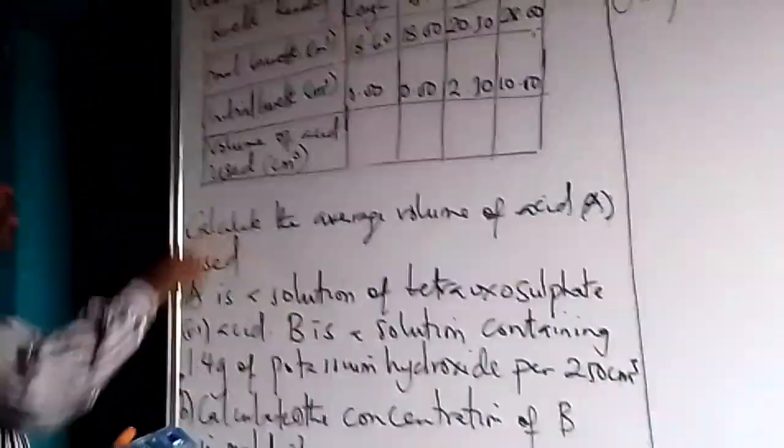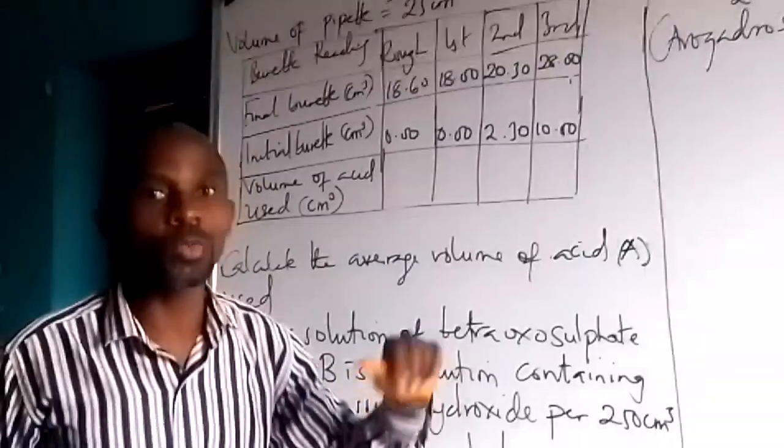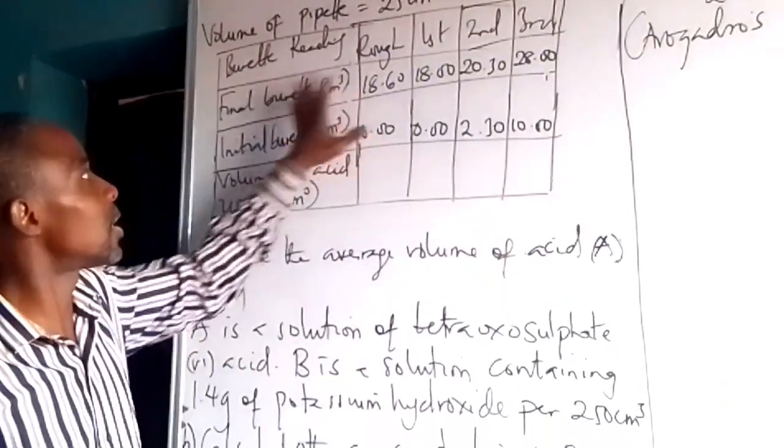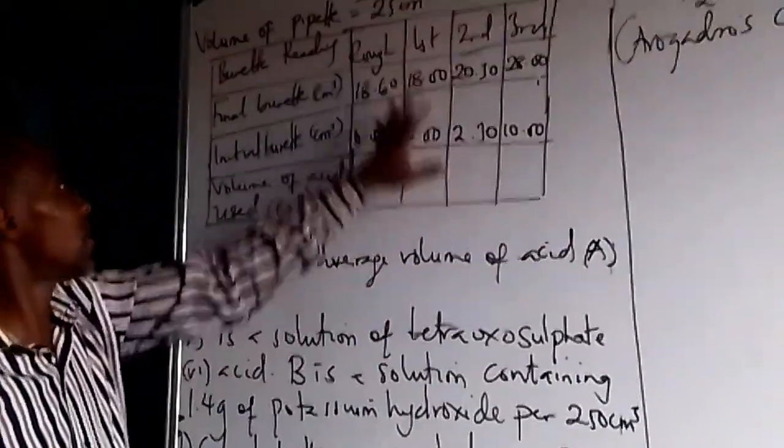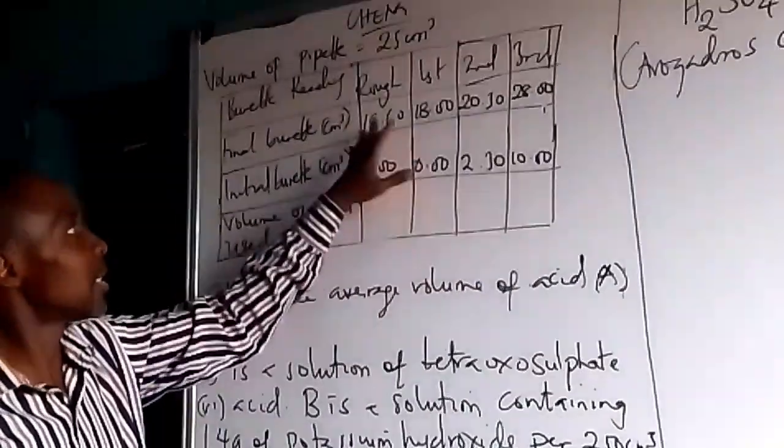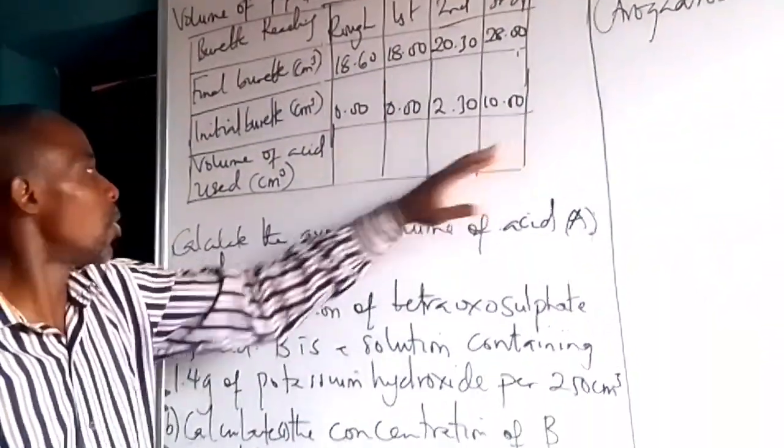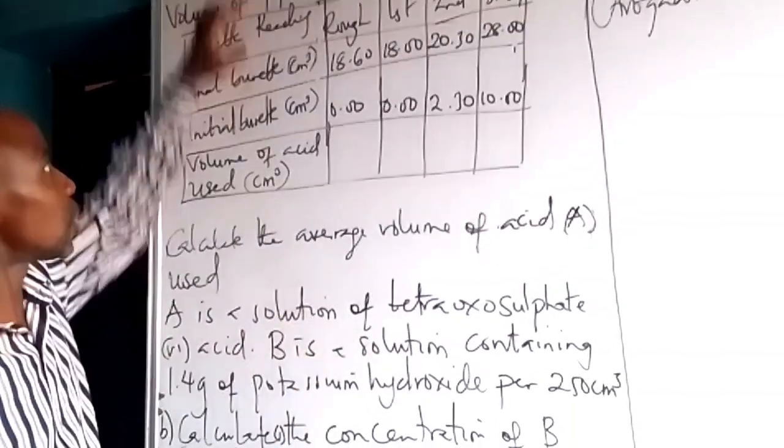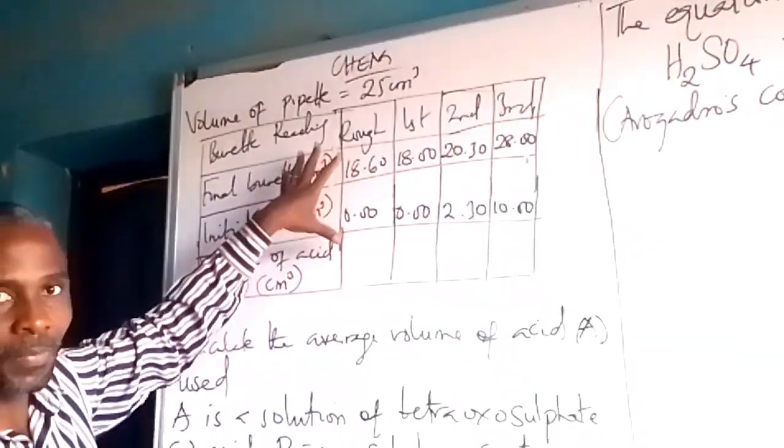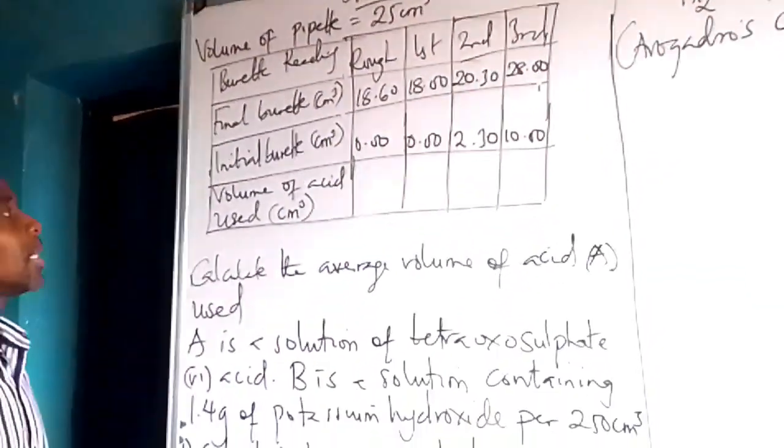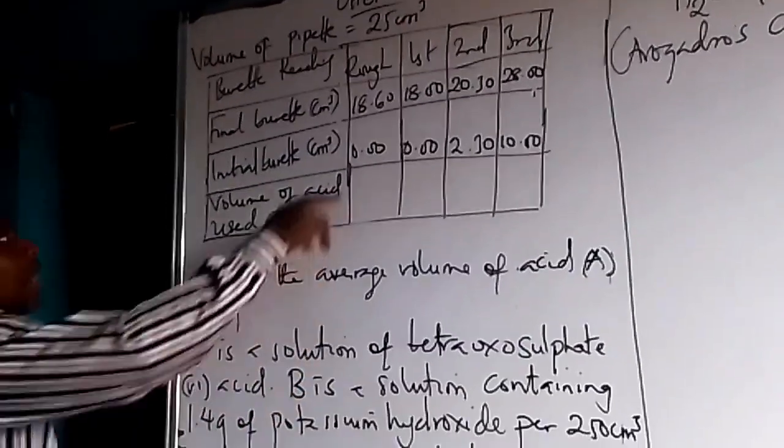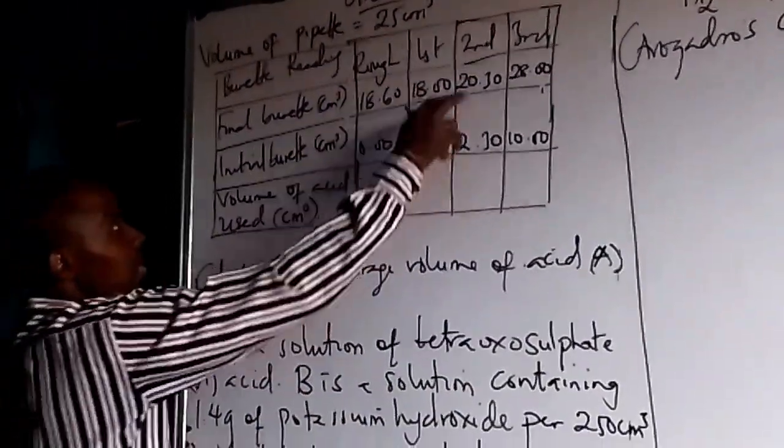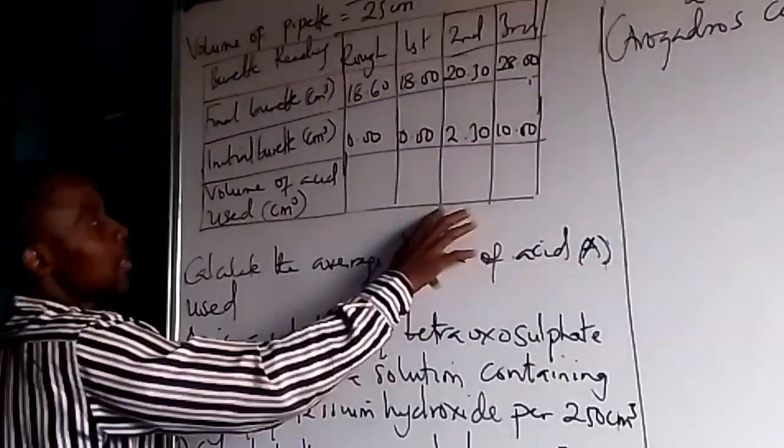Very quickly, you'll be given a table like this for alternative to practical chemistry. You'll be given a table like this and you are expected to fill this. You have to put this minus this, this minus this, this minus this to complete this table.